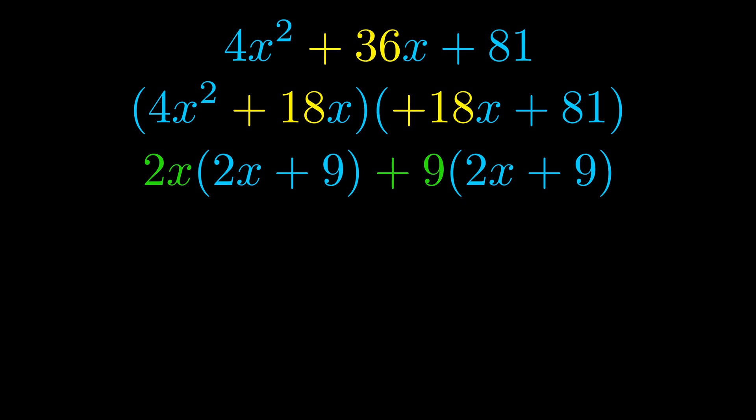Notice also how what remains inside of the parentheses is the same in both cases. The blue values are the same. Those blue values will become one of our factors and we will combine the two green values, the GCFs that we pulled out, to get the other one. And that is our fully factored equation.